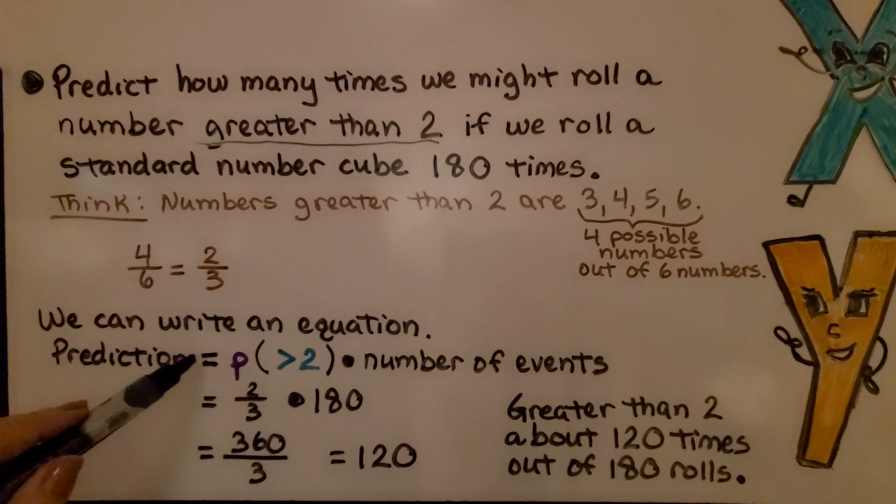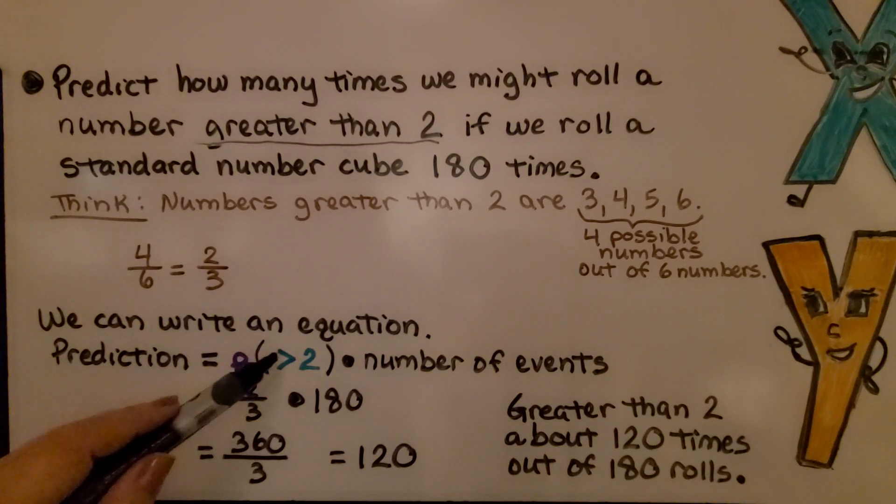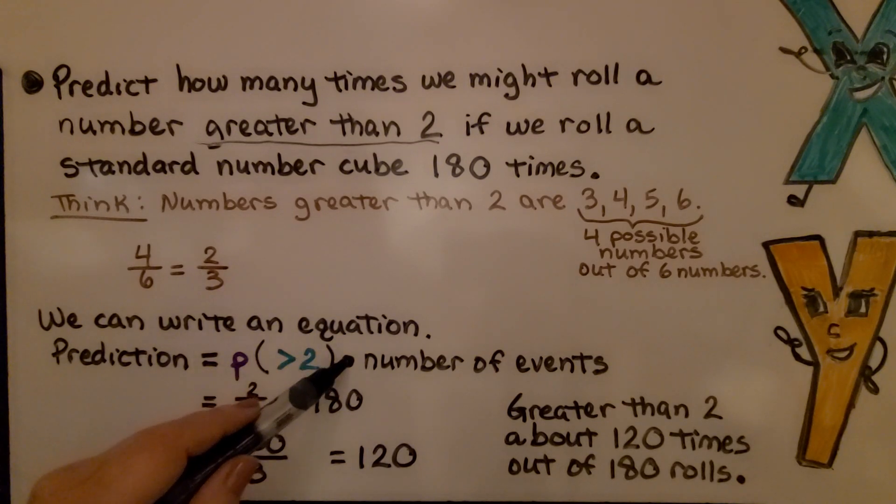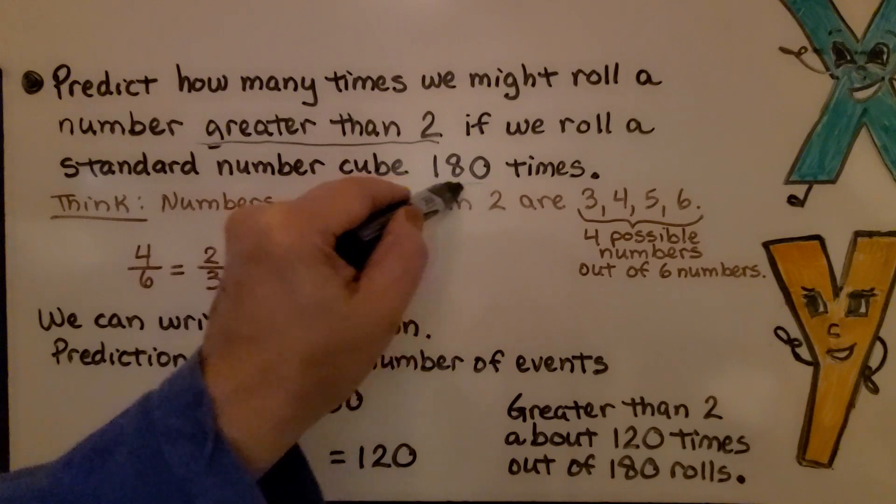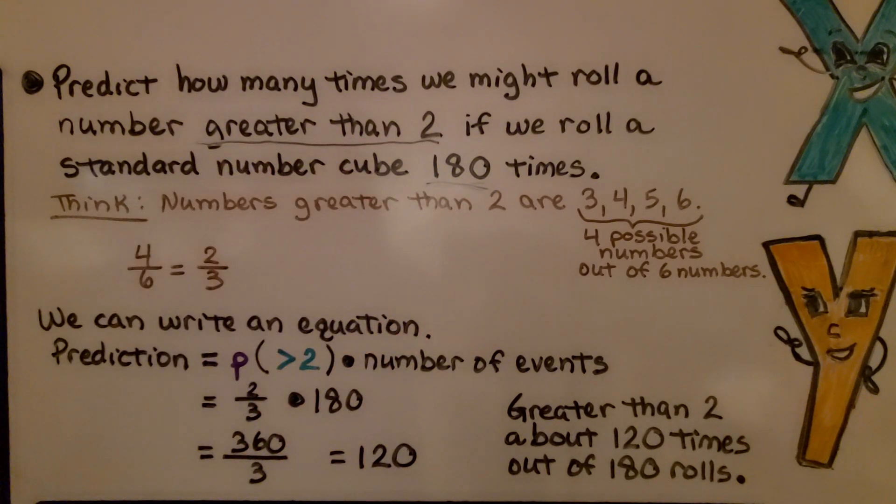Our prediction is equal to the probability that it's greater than 2, and we multiply it by the number of events. We know the number of events is 180, isn't it? We do 2/3 times 180.